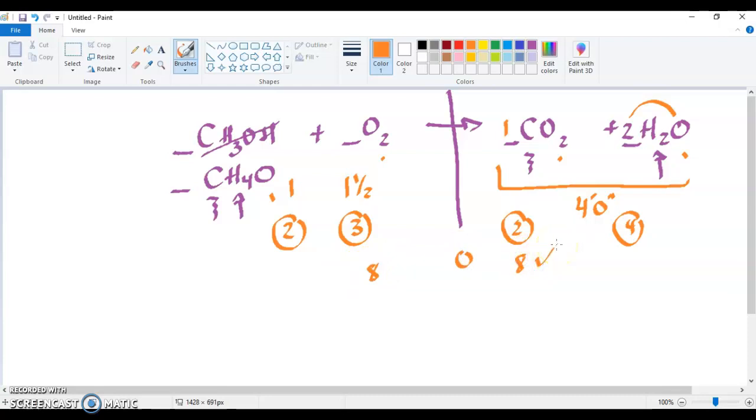Let's do one more. Let's take hexane. We'll do one more combustion. C6H14 plus O2 makes CO2 and H2O. Pause it and try it yourself if you think you can do it.